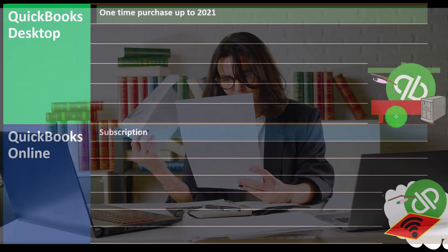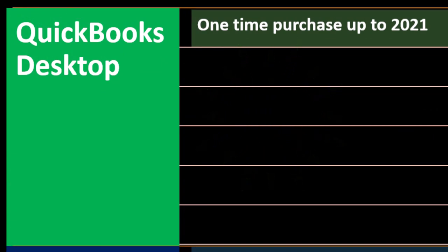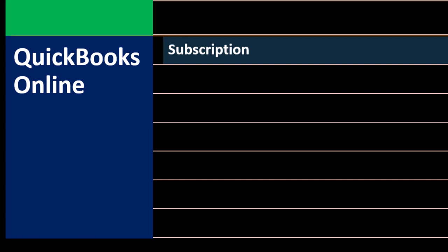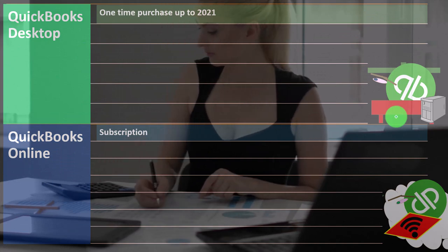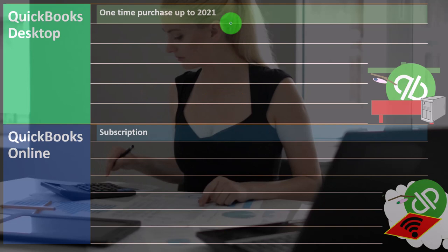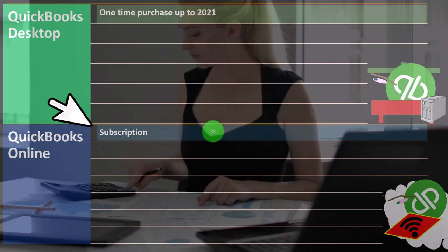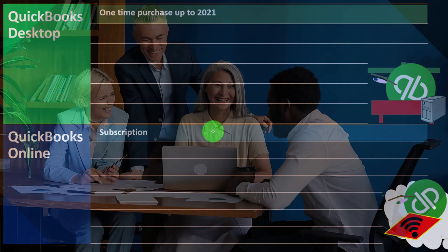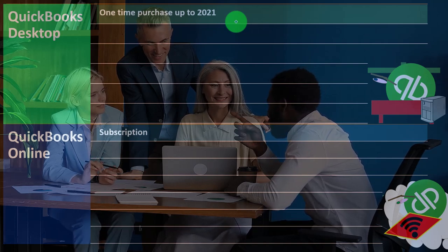The desktop version is quite nice for practicing accounting software. For students, even an older version works great because it functions similarly to Microsoft Word - the software is on your computer and you make data files, like Word documents, that are opened with the program. You can make as many company files as you want once you have the program on your computer, whereas with a subscription online basis you typically have to pay for each additional company file.